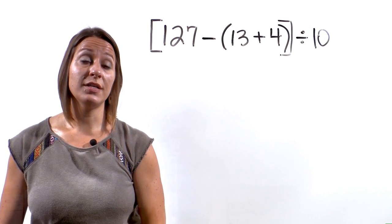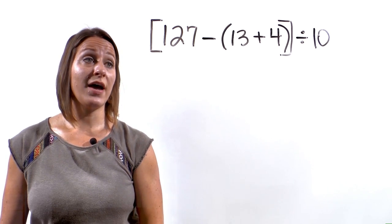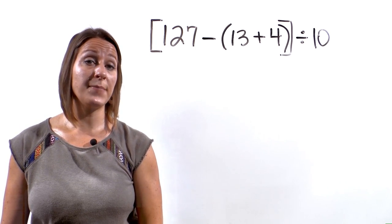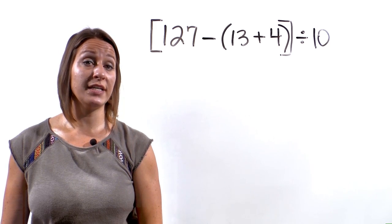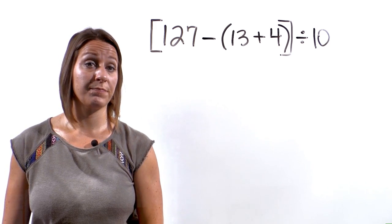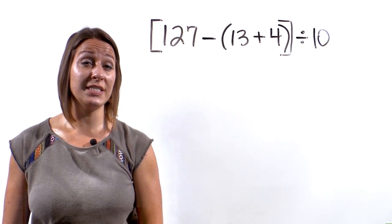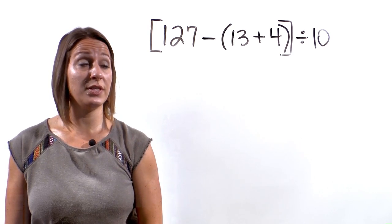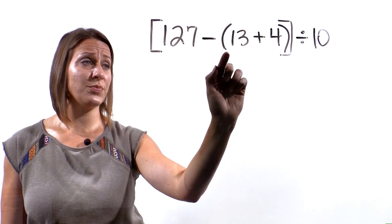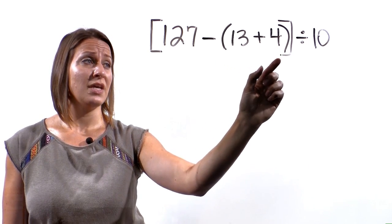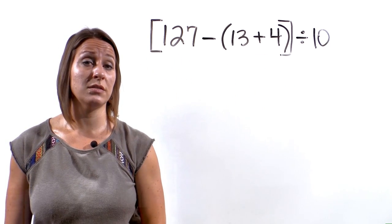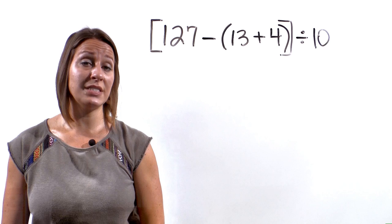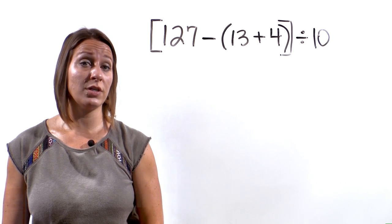Okay, let's take a look at another example. We have 127 minus 13 plus 4, all divided by negative 10. Now I want you to point out for this example, we have two sets of parentheses. We have our interior parentheses, and then we have our exterior parentheses, which are these brackets. We'll first work the interior and then we'll work the brackets.